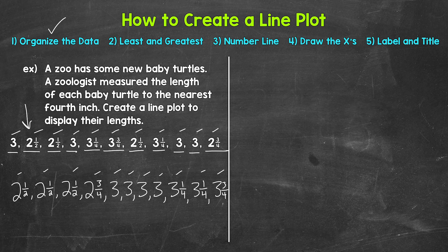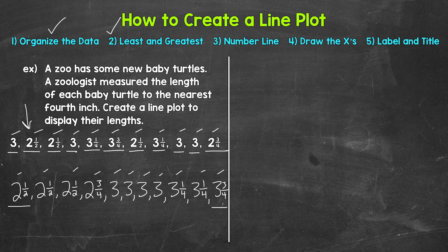Our next step: we need to find the least and greatest number that we are working with so we can make a number line that fits our data and includes all of our numbers. Our least is two and a half and our greatest is three and three fourths. Our next step: we need to make our number line. We need to include two and a half up to three and three fourths, and we will count up by a fourth.